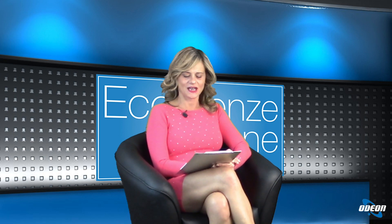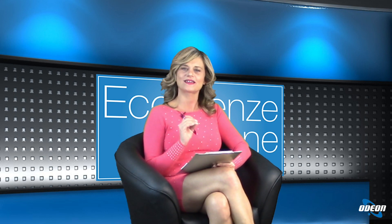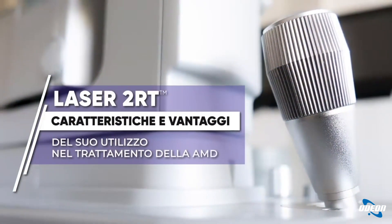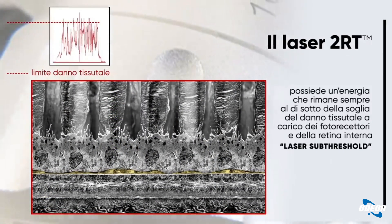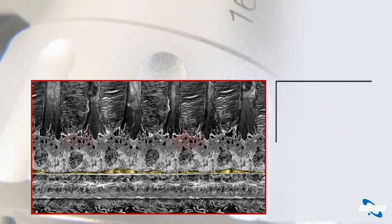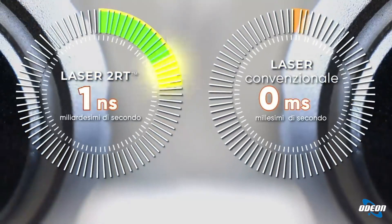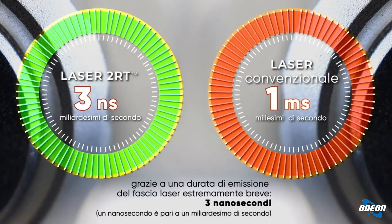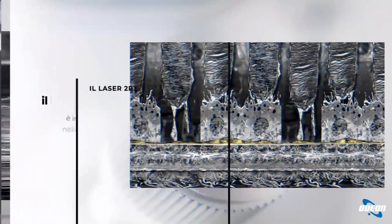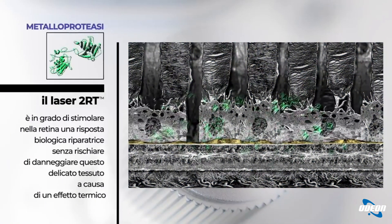Nel trattamento della maculopatia di tipo secco e nelle patologie retiniche viene utilizzata la tecnologia laser 2RT. Questo laser è un laser a nanosecondi, quindi molto veloce nel trattamento ed è sotto soglia: a differenza degli altri laser non brucia e non danneggia le zone vicine della retina dove si agisce. Vengono sostituite solo il 10-40% delle cellule colpite. 3 nanosecondi sono velocissimi rispetto agli altri laser che lavorano a 1 millisecondo, i quali, essendo più lenti, danneggiano anche le strutture esterne e non sono sotto soglia.